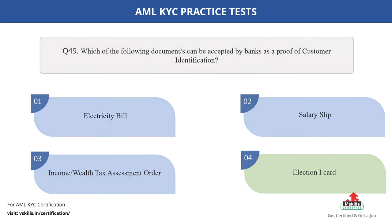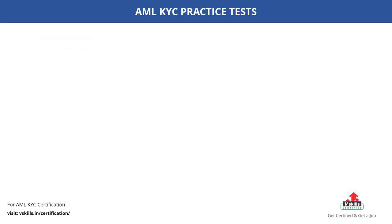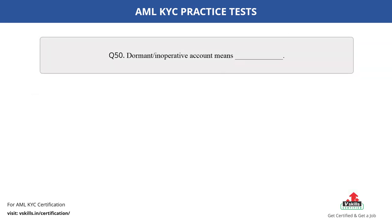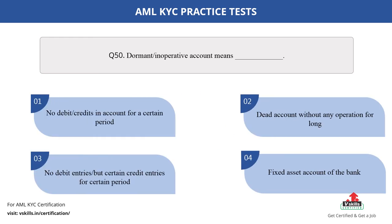Question number 50. What does dormant or an inoperative account mean? The options are: A. No debit or credits in account for a certain period; B. Dead account without any operation for long; C. No debit entries but certain credit entries for a certain period; D. Fixed asset account of the bank. The correct answer is option C.